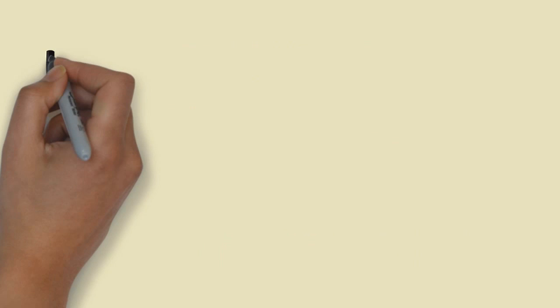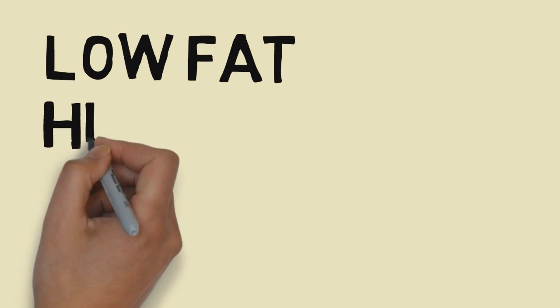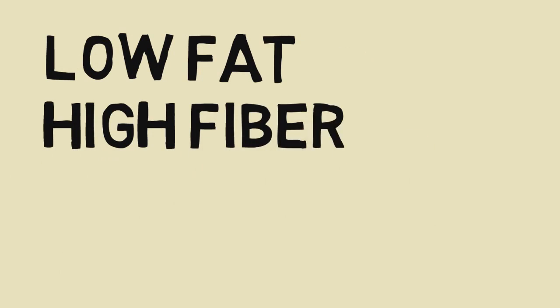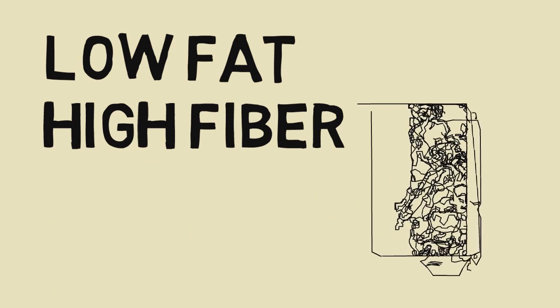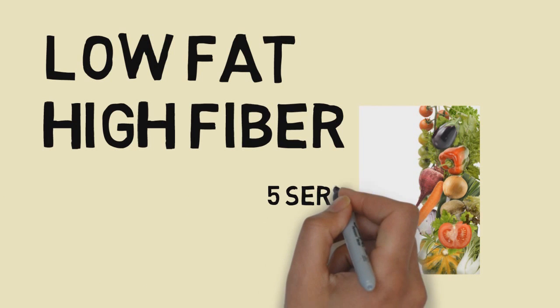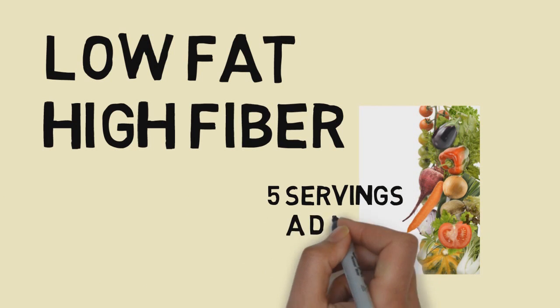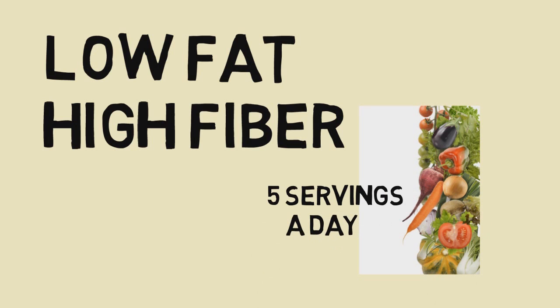Fruits and vegetables deliver a low-fat, high-fiber alternative to the vending machine choices. Raw carrots and sugar snap peas, for example, provide a crisp, satisfying crunch and won't sap your energy. Challenge yourself to eat at least five servings of fruits and vegetables each day.